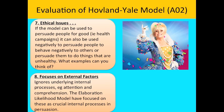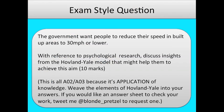Now for an exam question: something like — the government wants people to reduce their speed in built-up areas to 30 miles an hour or lower. With reference to psychological research, discuss insights from the Hovland-Yale model that might help achieve this aim. This is all AO2/AO3 application of knowledge. You need to weave the elements of the model into your answer. You would consider the source — pick someone attractive and credible, someone that people in society respect — then link it to Petty and Cacioppo's finding that the more attractive the source, the more persuasive it will be.